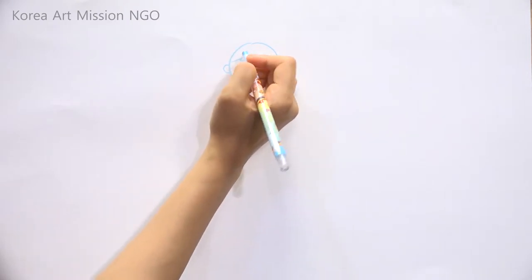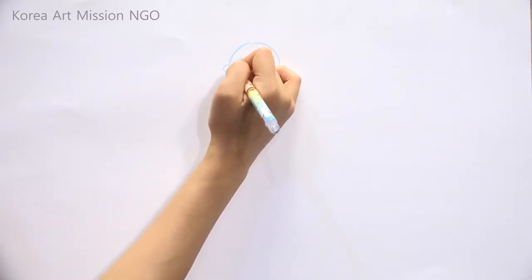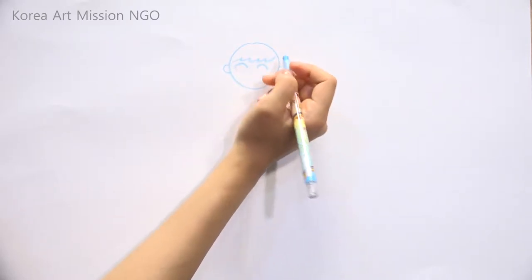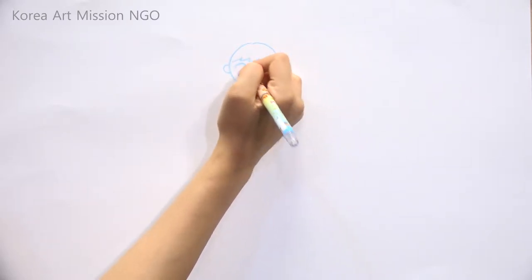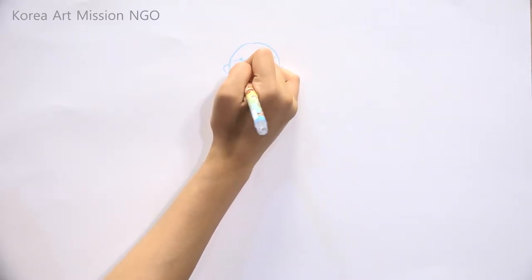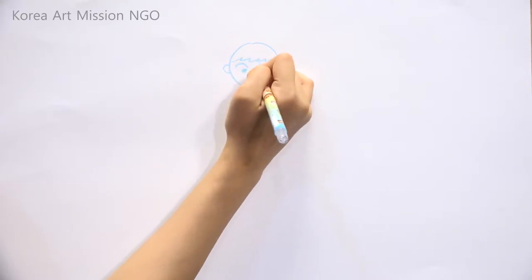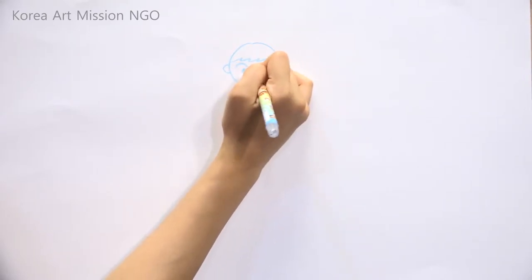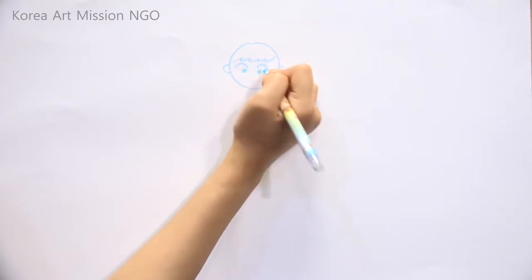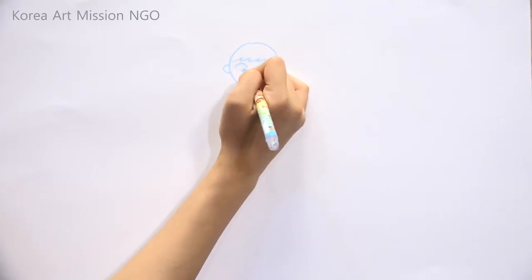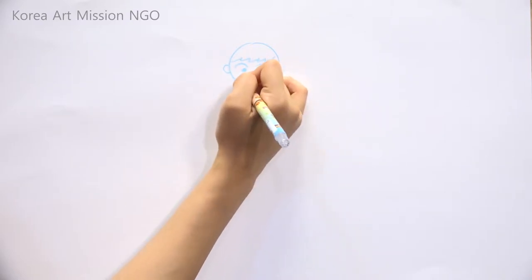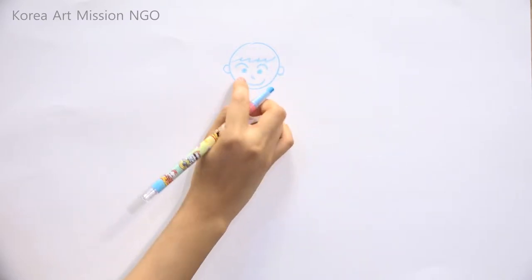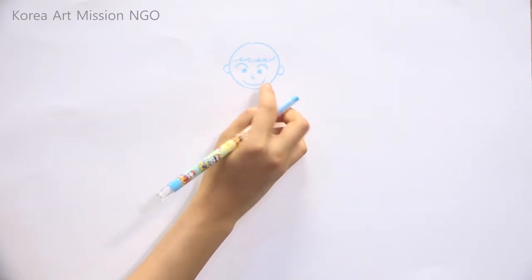Next, I'll draw his expression. His eyebrows should be curved up and his eyes should be little. Draw the nose like this and draw the mouth convexly like the girl's mouth.